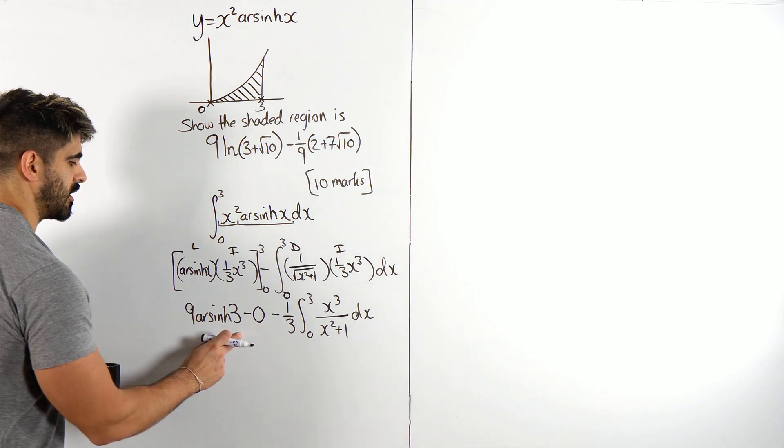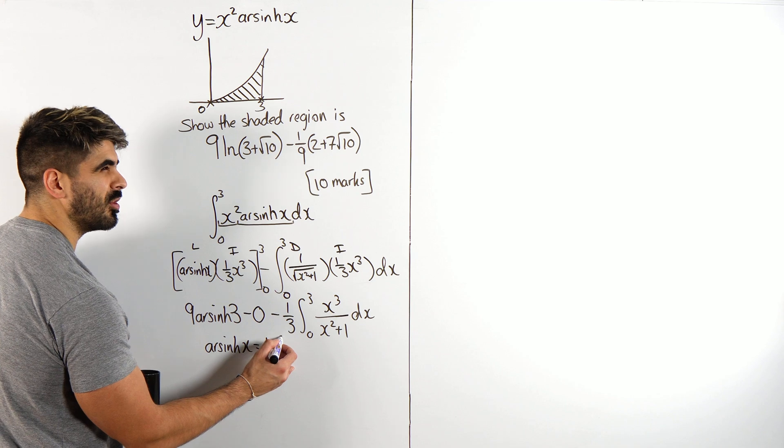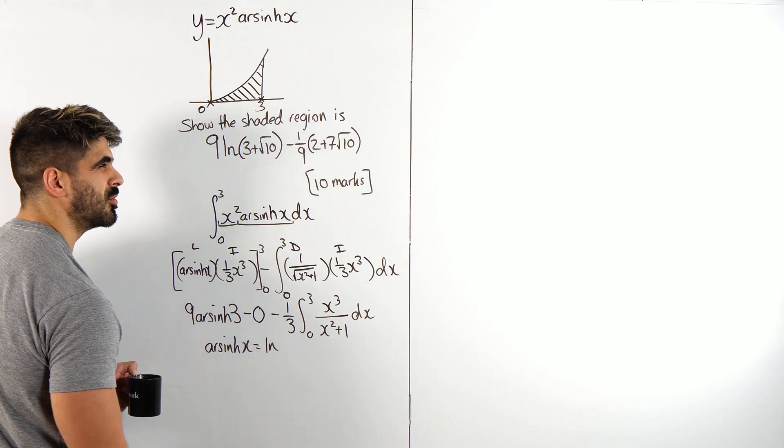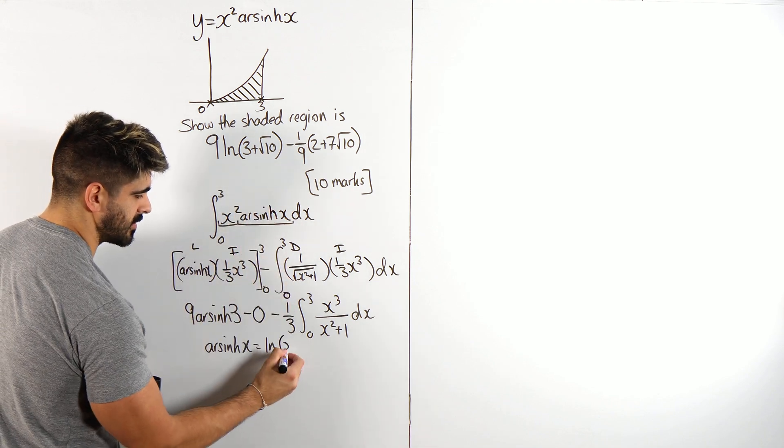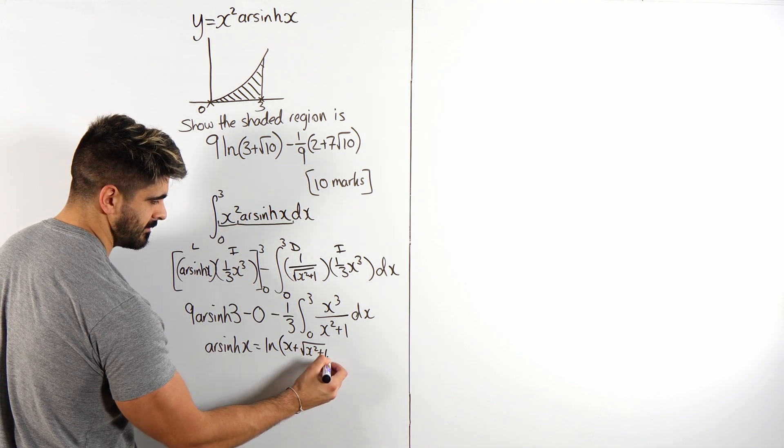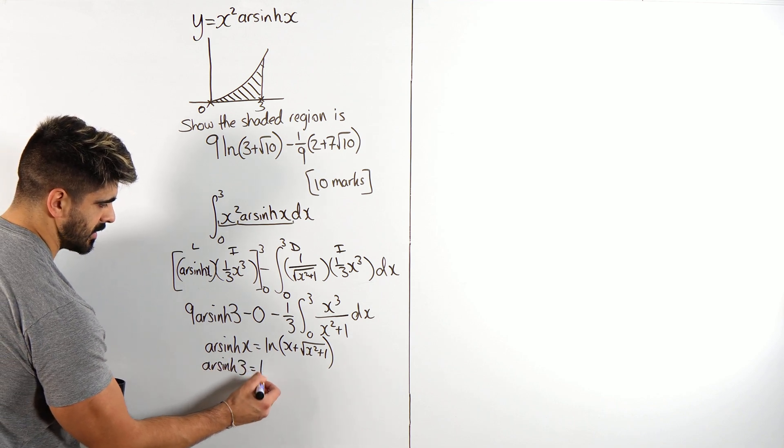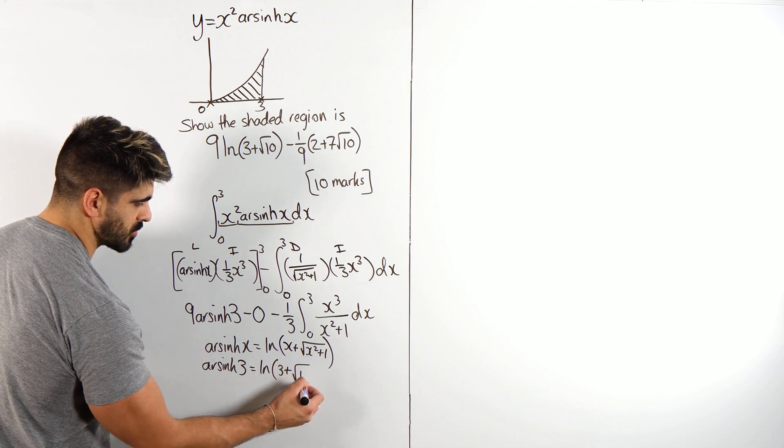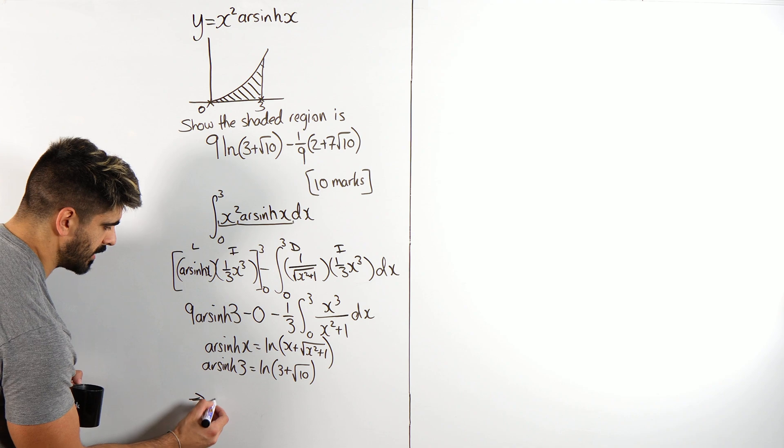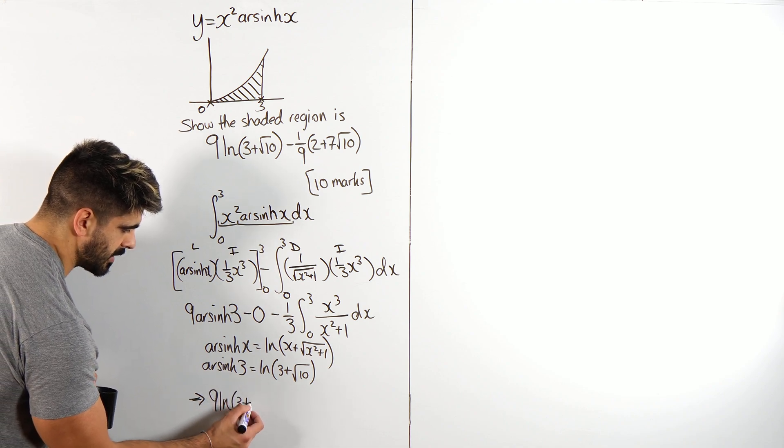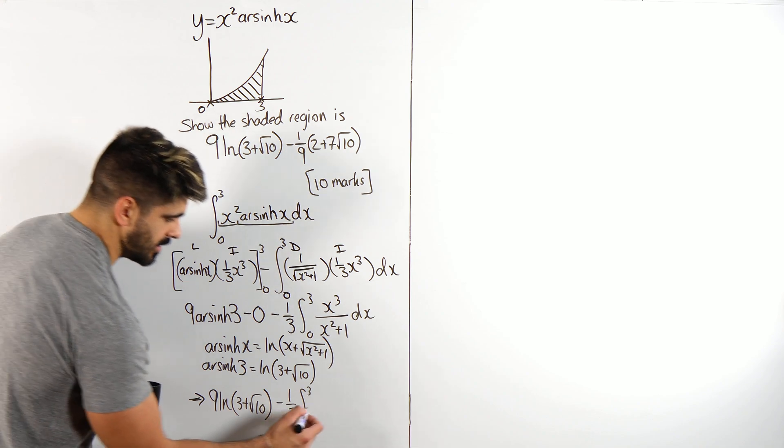Now, arshine 3. Now, I know arshine X is ln of X plus root X squared plus 1. I think. Looking at the answer, that kind of makes sense. So, arshine of 3 is ln of 3 plus root 3 squared plus 1 is 10. So, I'm seeing where this comes from. Cool.